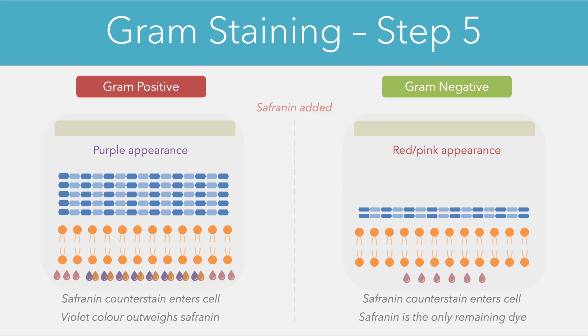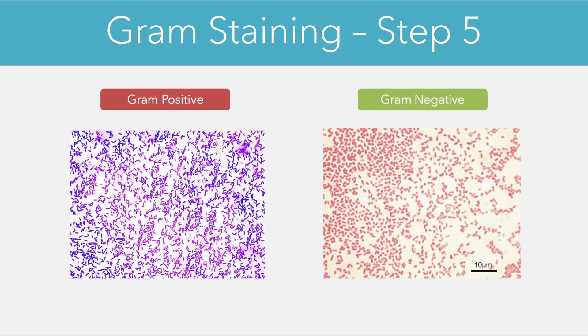If we were to take a final look under the microscope, we would see that the gram positive cells would appear purple while the gram negative cells would appear red. We also have a couple of images comparing the gram positive and gram negative cells under microscopy after the gram staining process is complete.